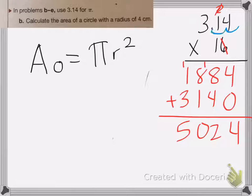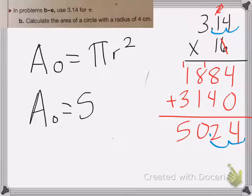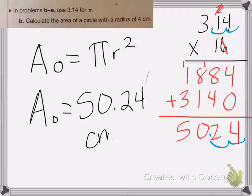Now count over the decimal place. 1, 2, 1, 2. So the area of my circle is equal to 50.24 centimeters squared. And that's all. Good luck on your homework.